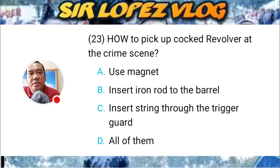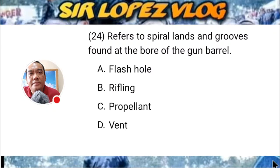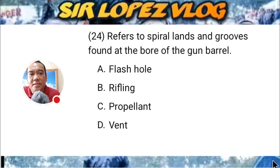Question number twenty-four: Refers to the spiral slants in grooves found at the bore of the gun barrel. A) plus hole, B) rifling, C) propellant, or D) bend?